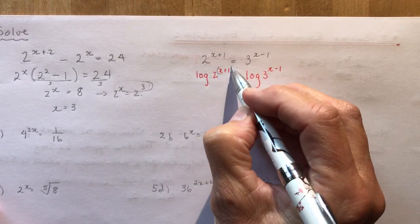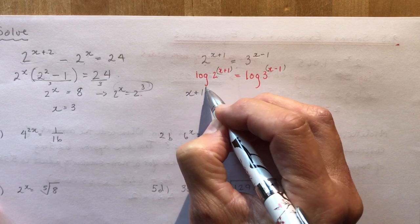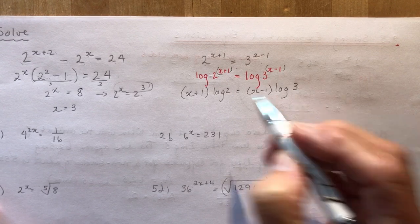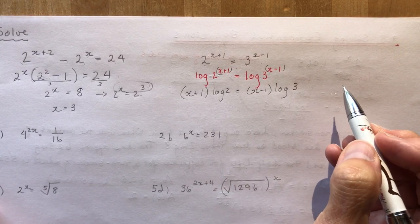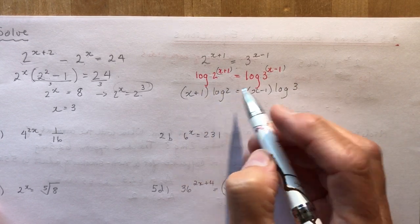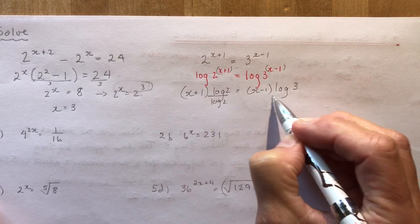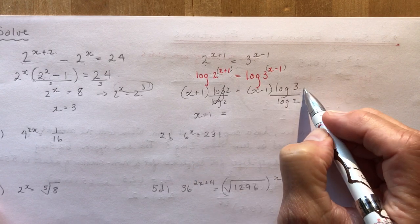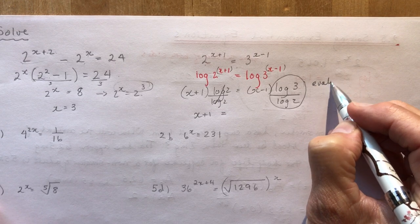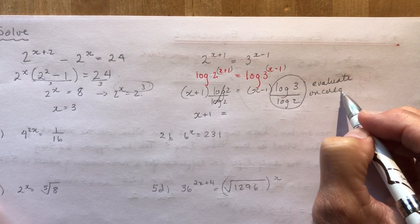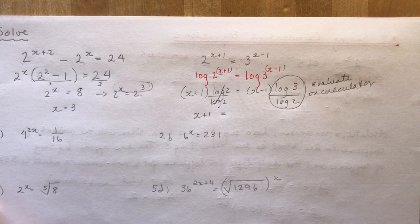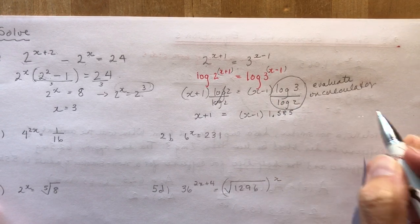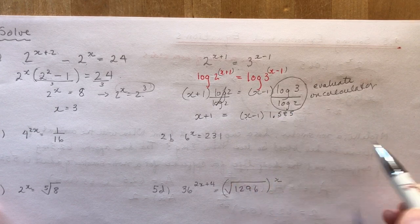Using the power law, bring the exponents to the front: (x+1) log 2 equals (x−1) log 3. Log 2 and log 3 are just numbers you can evaluate on your calculator. Divide both sides by log 2 to get: x plus 1 equals (log 3 divided by log 2) times (x minus 1). Evaluating log 3 over log 2 gives approximately 1.585.